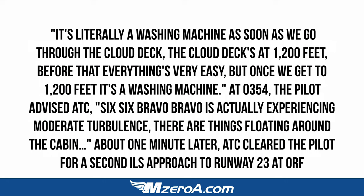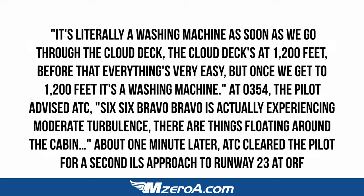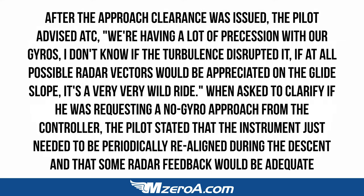At 3:54 the pilot advised ATC: '66 Bravo Bravo is experiencing moderate turbulence — there are things floating around the cabin.' We just learned the definition of moderate turbulence — it didn't mention things floating around the cabin. I believe he was experiencing severe to possibly extreme turbulence. About one minute later, ATC cleared the pilot for a second ILS approach to runway 23 at ORF. The pilot then advised ATC: 'We're having a lot of precession with our gyros — I don't know if the turbulence disrupted it. Radar vectors on the glide slope would be appreciated. It's a very, very wild ride.'